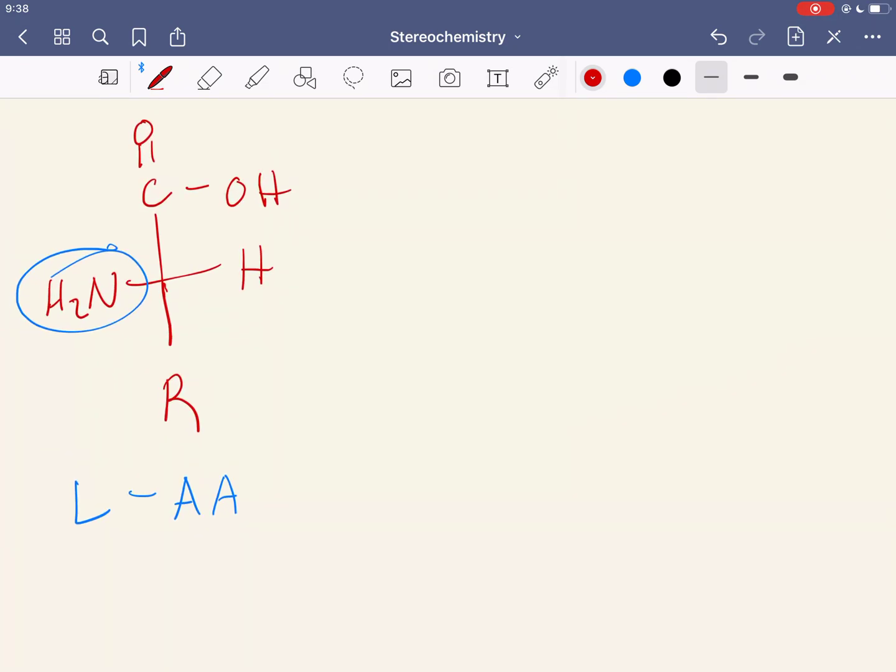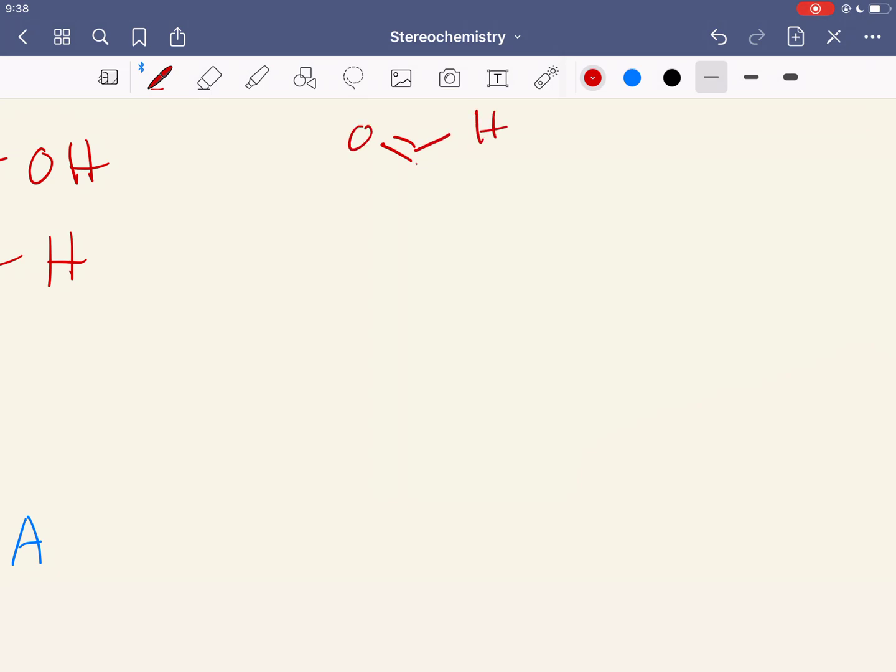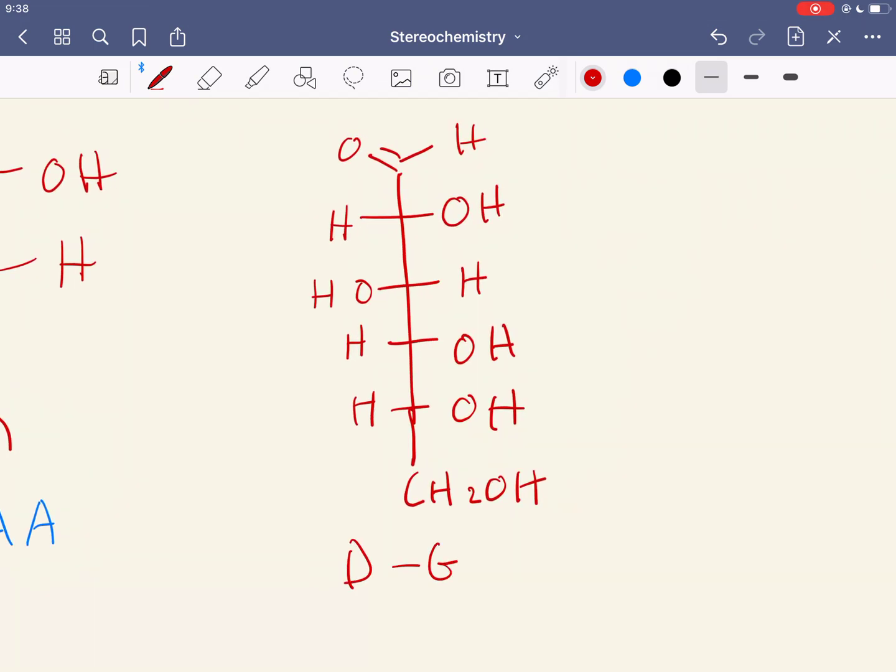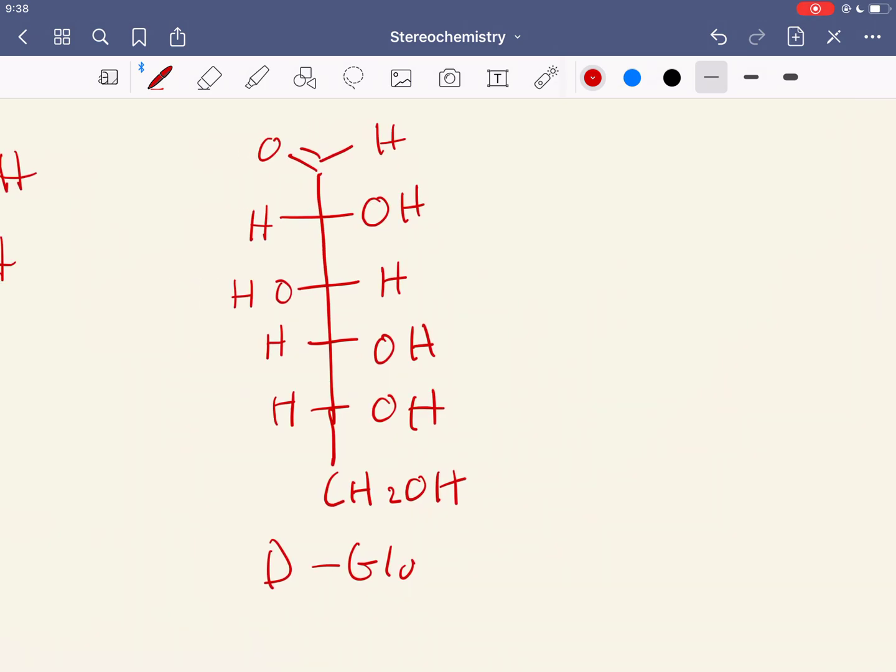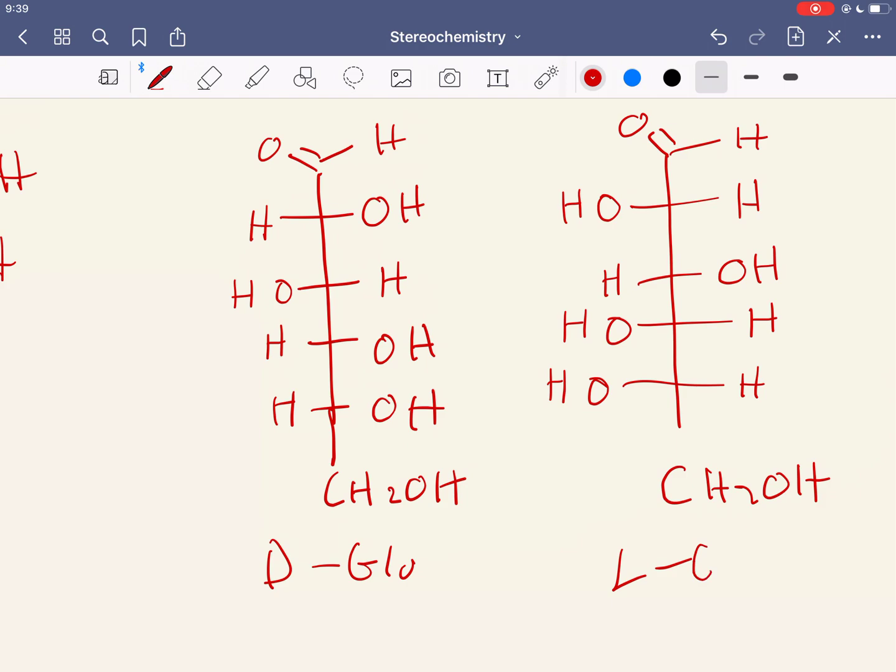And one final thing to note here, is that if I have this going like this, now I'm going to be drawing glucose. So this is OH, H, OH, and then OH, and then CH2OH. This is D-glucose. When I have L-glucose, it's the enantiomer. So the whole thing is flipped. Whatever was on one side is now on the other. So it looks like this now.